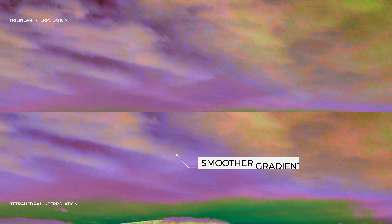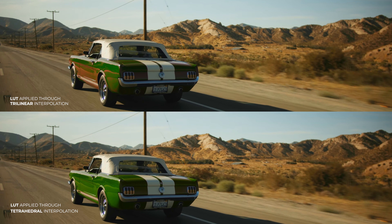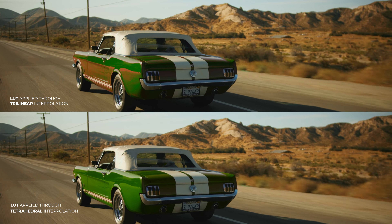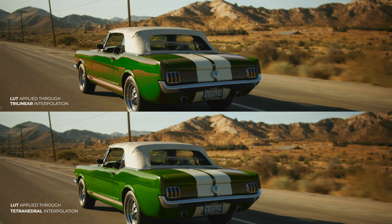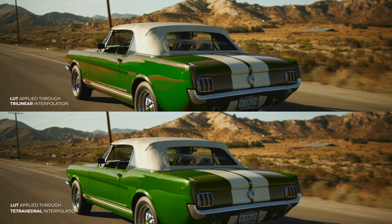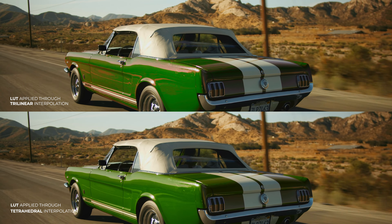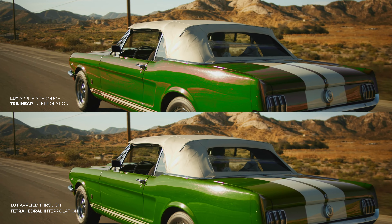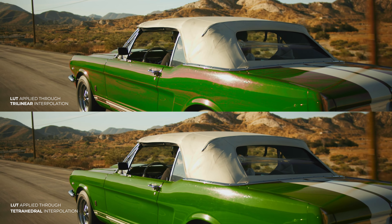Notice how there are unpleasant color fringes on the trilinear side of the image. Tetrahedral interpolation method provides a much more pleasant hue shift. That's because it uses a superior method to interpolate values in between the data points and can perform 3D LUT interpolation with a way higher accuracy. So even with the low precision of a 17-point cube LUT, you will get very superior results with tetrahedral interpolation.